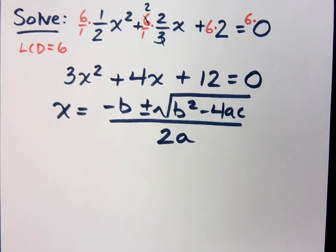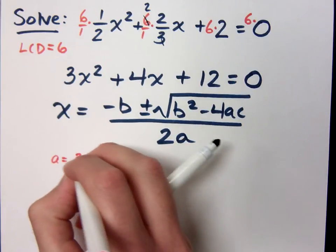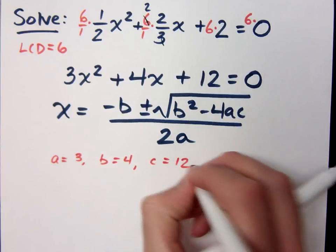See? Get it stuck in your head. It's a good thing. So now I've got a is equal to 3, b equals 4, and c equals 12.